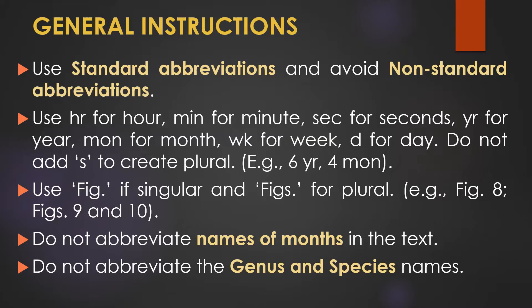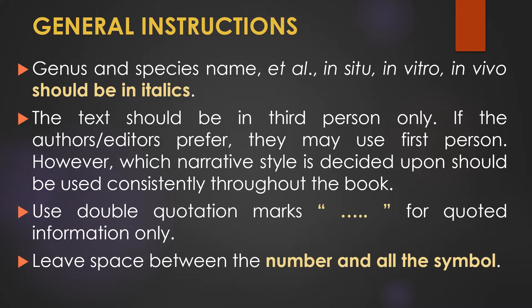Do not abbreviate the names of months in the text, and do not abbreviate scientific names such as genus and species names — kindly give the genus and species name in full format. The genus and species name should be in italics font. Likewise, terms such as in situ, in vitro, and in vivo should all be written in italics font while writing the chapter.